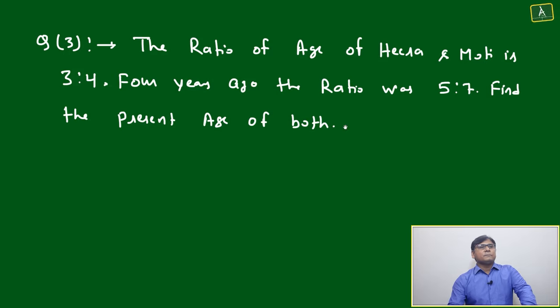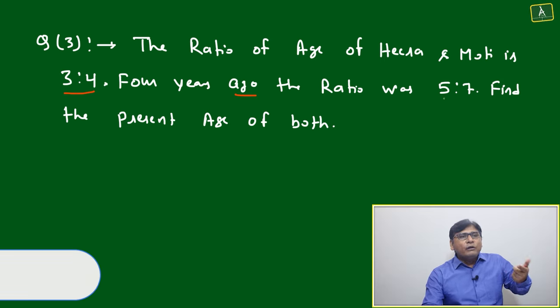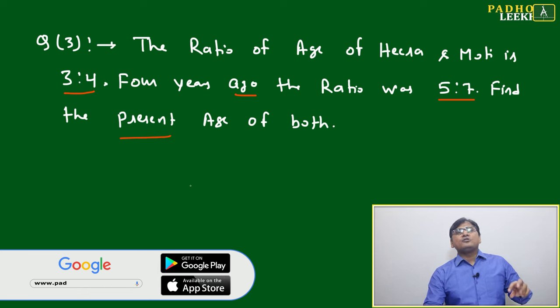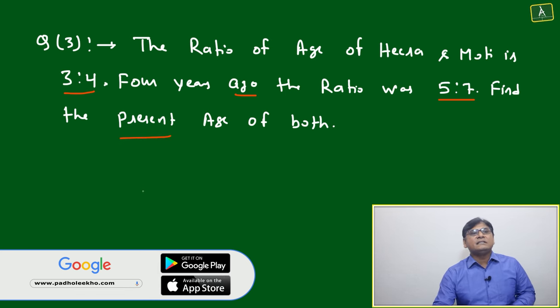It will become 2ab. Okay, now we'll come to question number three. Question number three is the ratio of age of Hira and Moti. Again, Hira and Moti, I'm not leaving behind. Again, age of Hira and Moti is 3 ratio 4. Four years ago the ratio was 5 ratio 7. Find the present age. How will we find this?